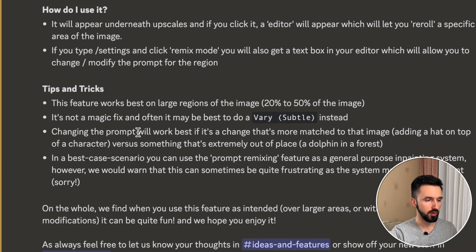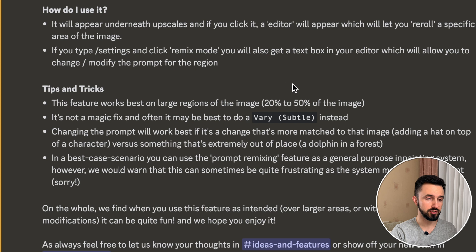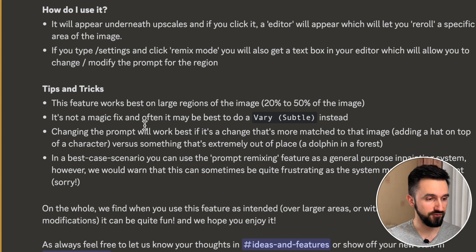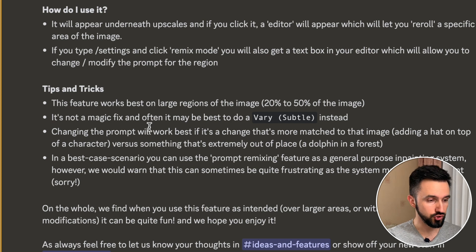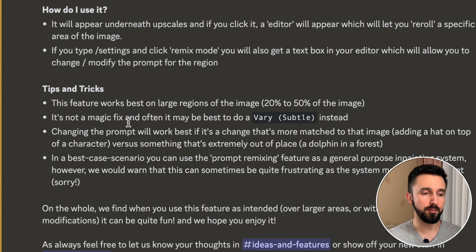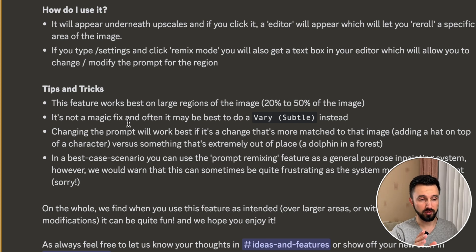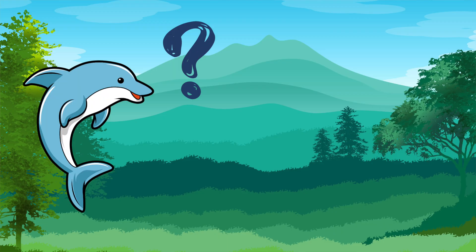There is a Vary Region and there are main tips and tricks. This feature works best on large regions of the image — 20 to 50% of the image. It's not a magic fix, and often it may be best to do something very subtle instead. Changing the prompt will work best if it's a change more matched to the image — adding a hat on top of a character, versus something extremely out of place, like a dolphin in a forest.